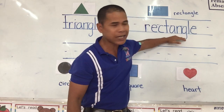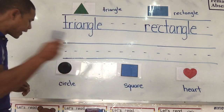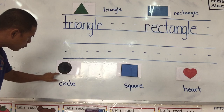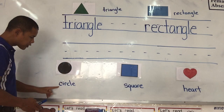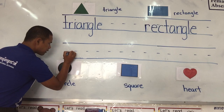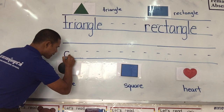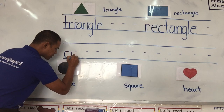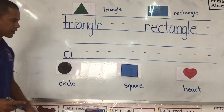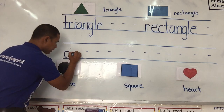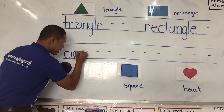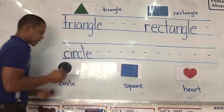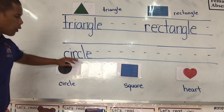Next one is circle. Circle starts with the letter C: from the middle line, curve into the bottom line and stop. I — from the middle line, straight down to the bottom line, with a dot. Then R, C, L, E. We have the word circle: C-I-R-C-L-E.